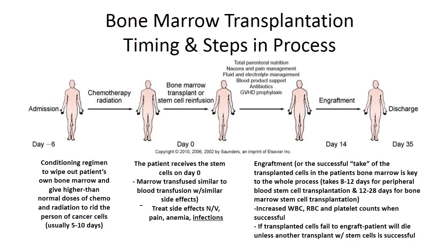By day 14, engraftment — the successful take of the transplanted cells in the patient's bone marrow — is the key goal. It typically takes 8 to 12 days for peripheral blood stem cell transplants, and 12 to 28 days for bone marrow stem cell transplants. Successful engraftment is indicated by increases in white blood cells, red blood cells, and platelet counts, which is positive after the pancytopenia these patients experience.